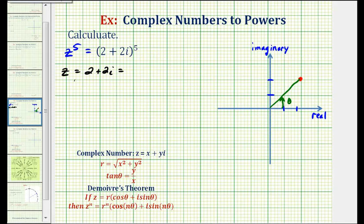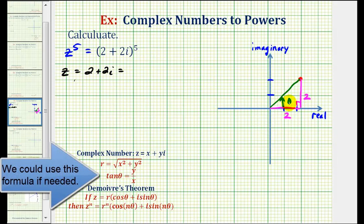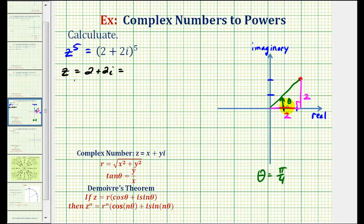and this angle here would be theta. Let's go ahead and sketch the reference triangle. Notice how both legs have a length of 2, which means we should recognize the angle theta would be 45 degrees, or π/4 radians, because this is a 45-45-90 reference triangle. So theta equals π/4 radians.